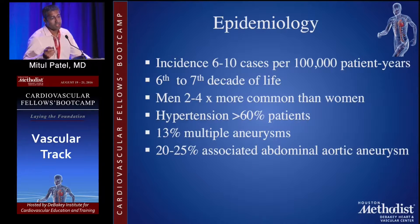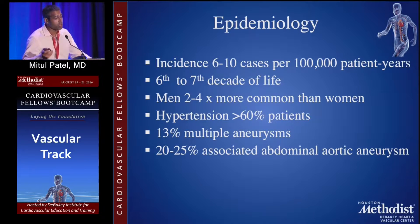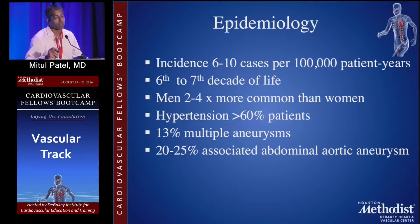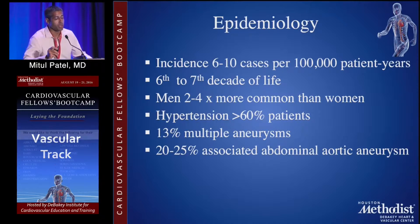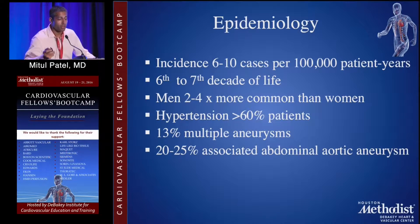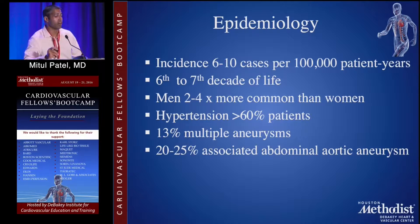The incidence is six to ten cases per 100,000, usually occurring in the sixth to seventh decades of life. Men are more commonly affected than women. High blood pressure tends to be a common finding. Thirteen percent of patients have multiple aneurysms, and 20 to 25% are associated with abdominal aneurysms.